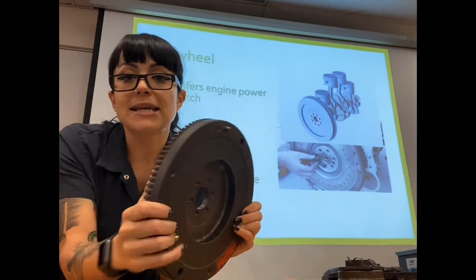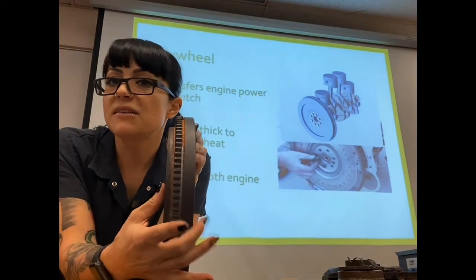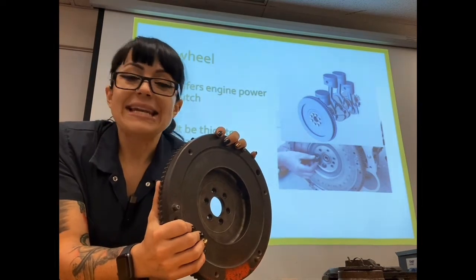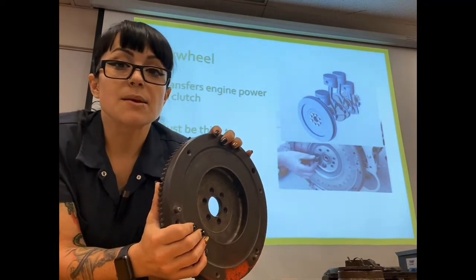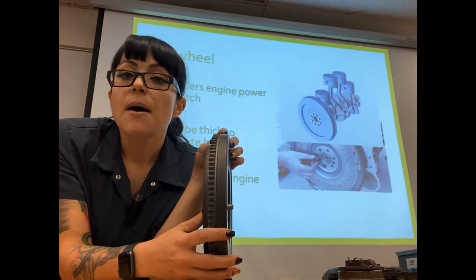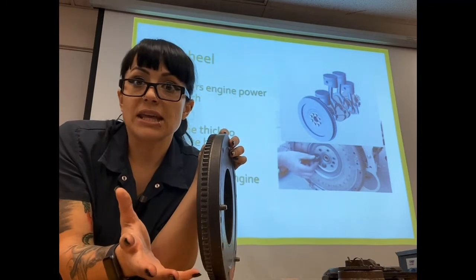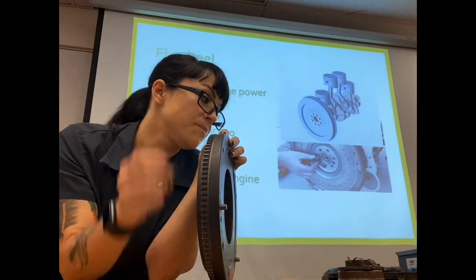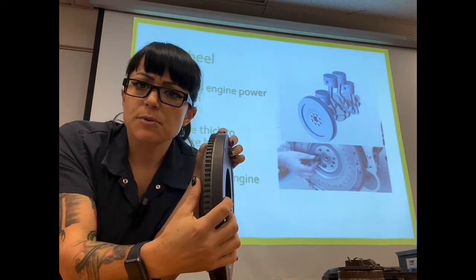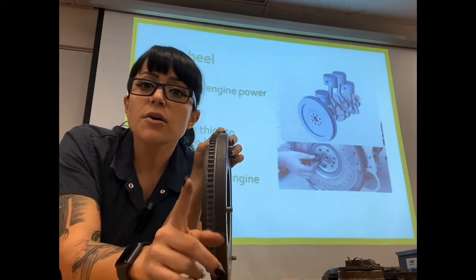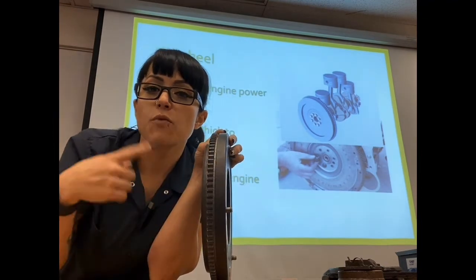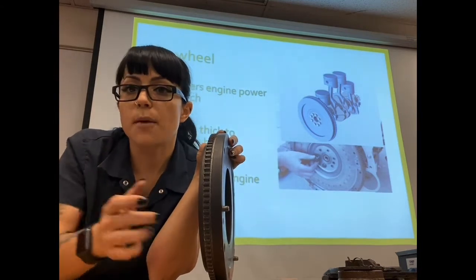First, the flywheel needs to be fairly thick — it needs to have some meat on its bones because it needs to be able to dissipate heat. If it's not thick enough, it's going to warp and cause all kinds of problems. It won't be able to get rid of the heat and it'll overheat fairly quickly, kind of like a brake rotor would.